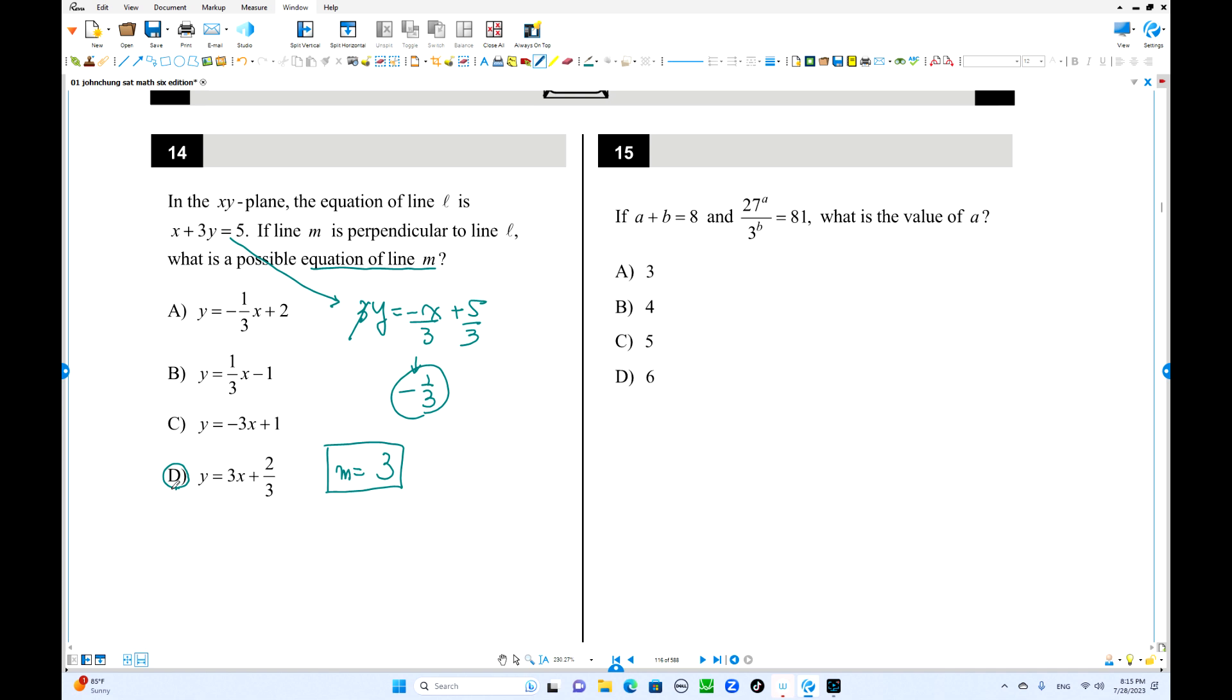This is the number 15 here. A plus B is 8. Another one is the exponent form. So we can simplify this one. 27, 3, 81. There is a common base number. It's 3. So 27 is 3 to the third power, to the 3a. This is 3 to the 3a minus b equals 3 to the 4. So 3a minus b equals 4. Another equation over here. A plus b equals 8. To find the value of a, you can use addition. 4a equals 12, a equals 3. That's the answer.